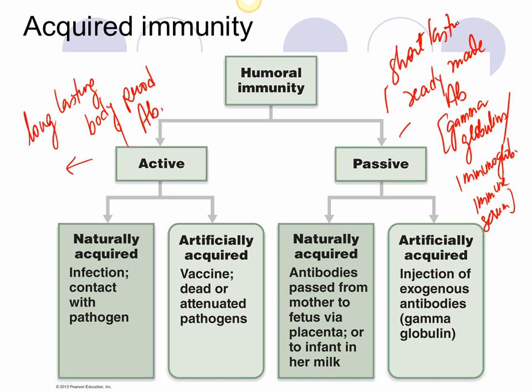A helpful analogy: if you buy your own car, you take good care of it — that's like active immunity. If your parents give you the car, it gets dents and damage quickly and doesn't last long. In both active and passive immunity, we have two types: naturally acquired and artificially acquired.